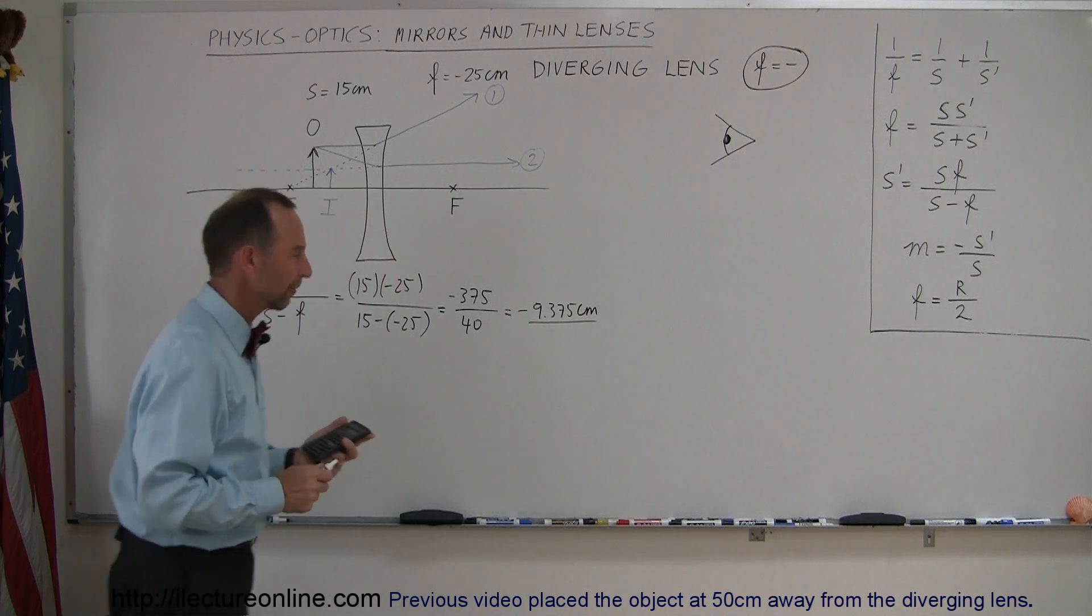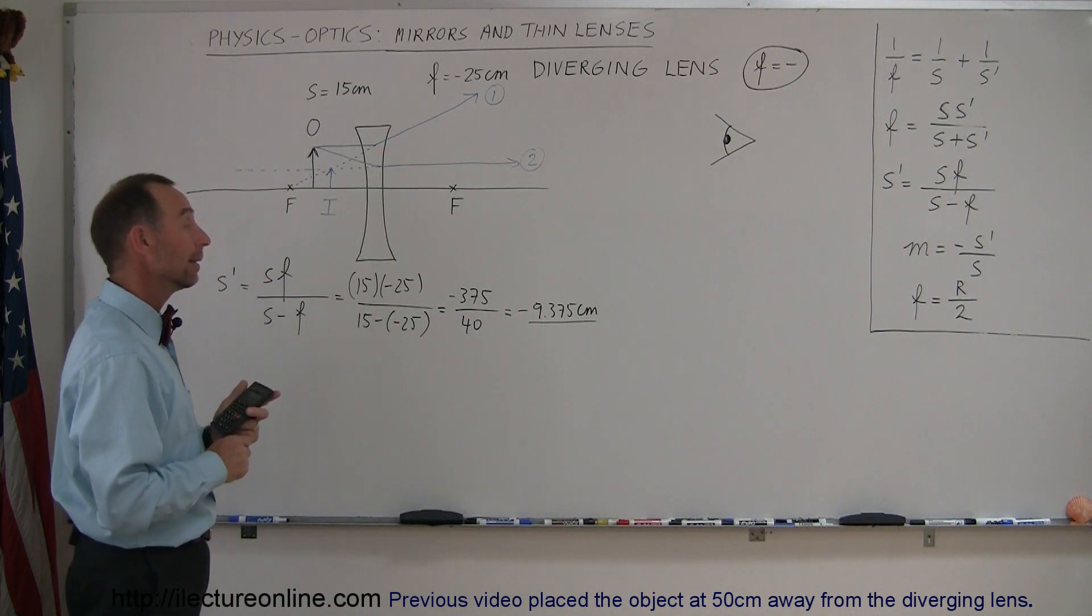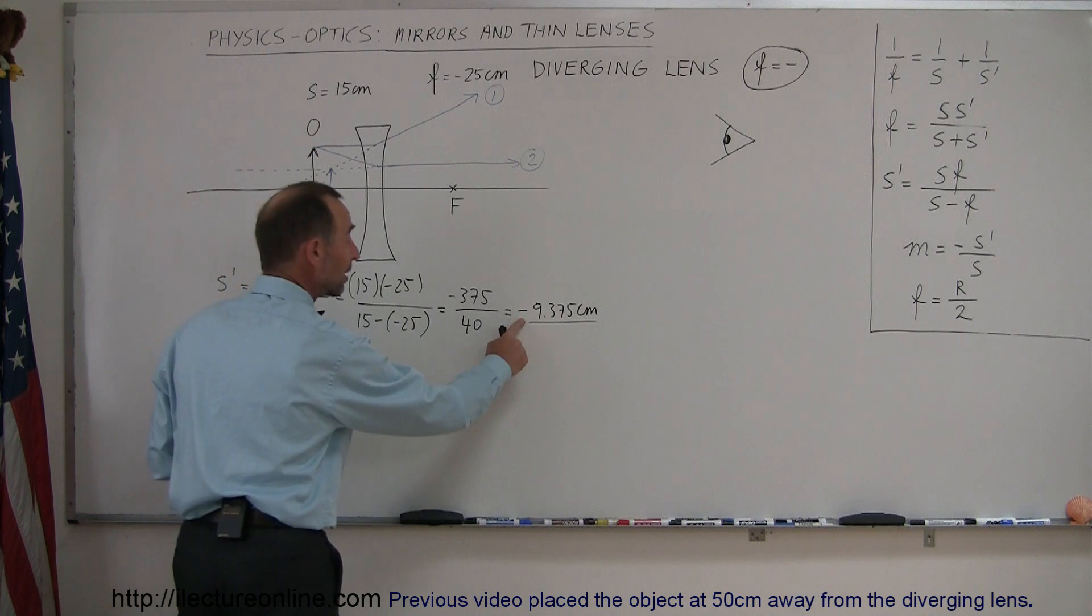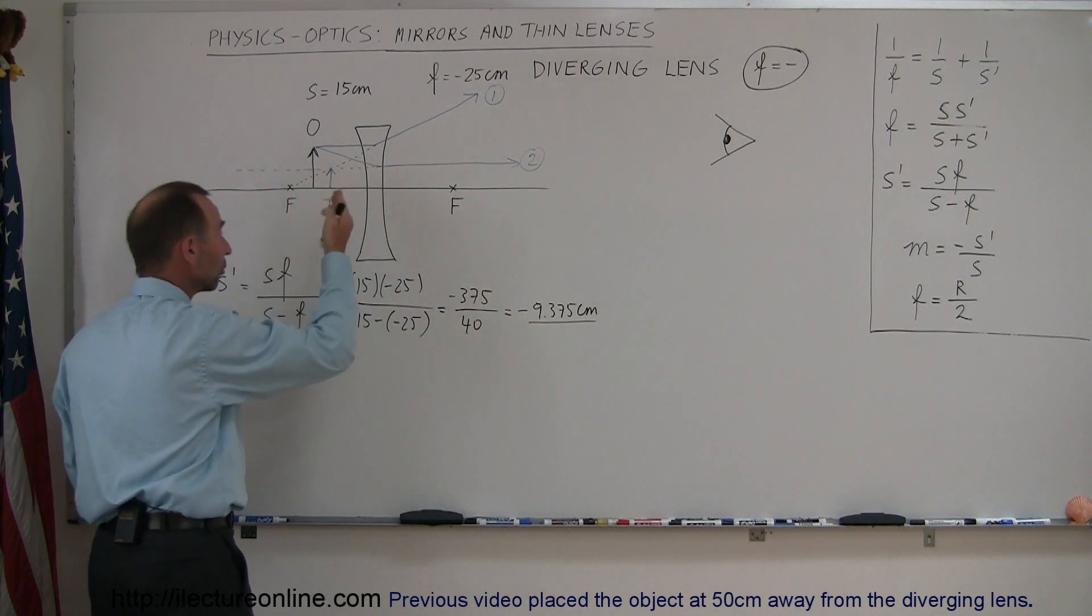Of course, added a few extra significant figures, they're not really necessary. Alright, now the fact that this is a negative means that the image was in front of the lens, which we already knew.